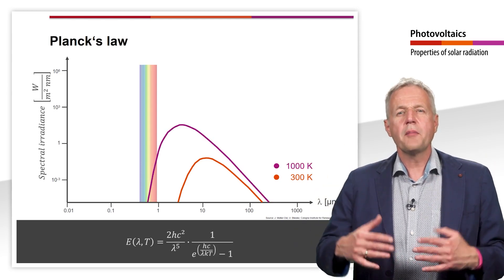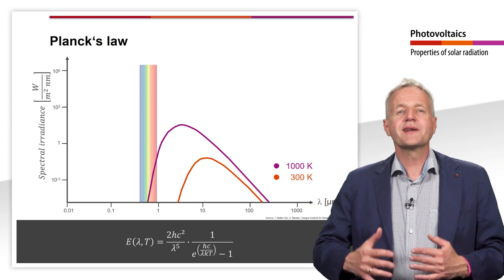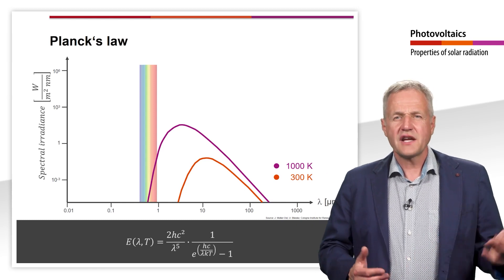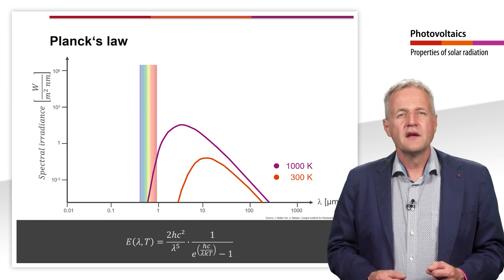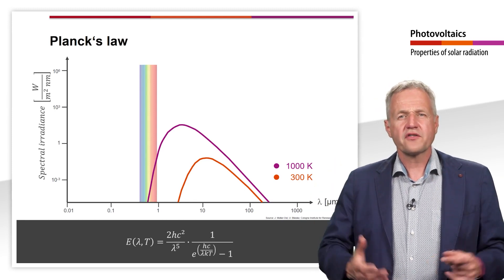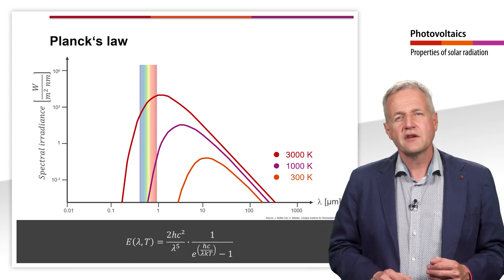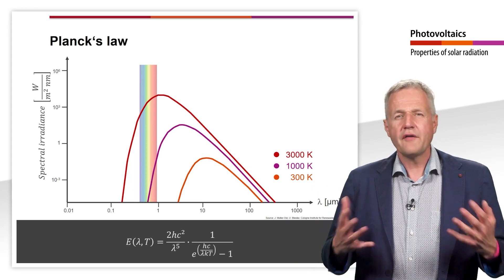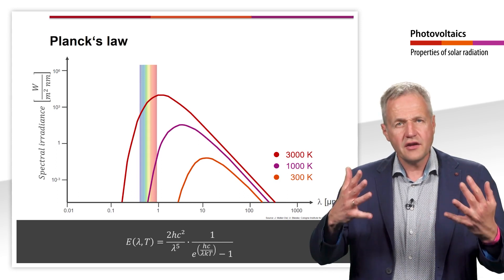Above a temperature of about 1000 K, blackbody radiators begin to emit light in the visible range. At the same time, the radiation maximum also shifts to shorter wavelengths. At a temperature of about 3000 K, the entire visible spectrum is already covered. This temperature corresponds approximately to a halogen lamp. However, the radiation maximum is not in the visible range, but in the infrared.